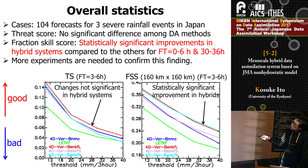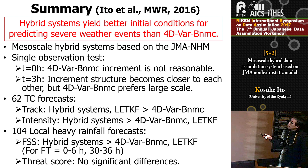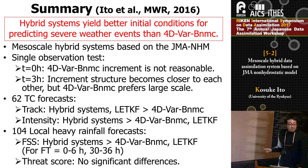Let me summarize. This work was published in Monthly Weather Review last year. Basically, hybrid systems yield better initial conditions for predicting severe weather events than 4DVar BNMC, as expected. The mesoscale hybrid system was developed based on the JMA non-hydrostatic model. Thank you very much.